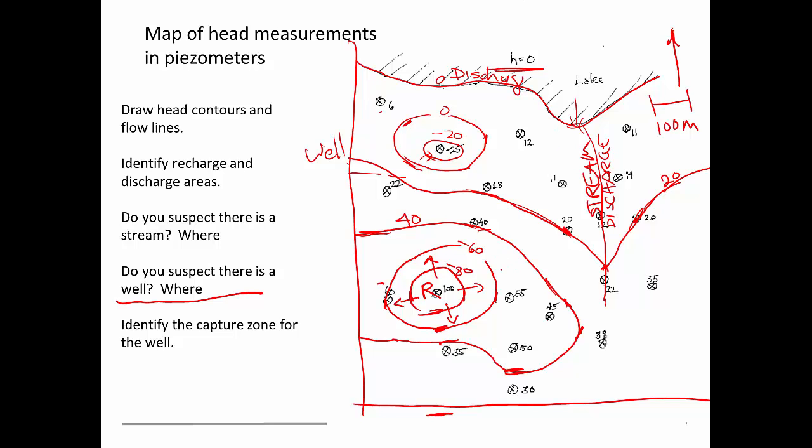So let's just say we have water that's recharged right here. Then the flow is going to go, and the flow has to move through the aquifer and always stay perpendicular. So it's going to look like that. And then it's going to curve. And it's perpendicular and perpendicular. And then it probably goes like that to the stream. Okay, so that's a flow path.